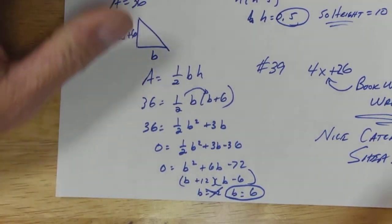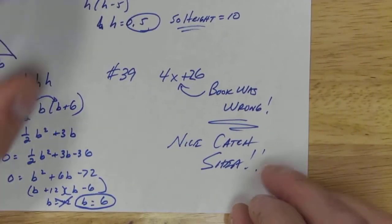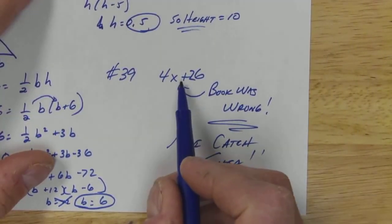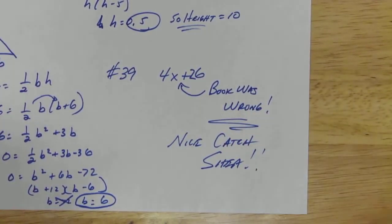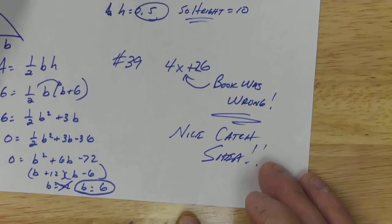39 had a little mistake in the back of the book. Good catch to Shea, nice job. It should be 4x plus 26. So if you got plus 26, you did it right, the book was wrong. In my book they had the right answer in the teacher's manual in the front, but in the back they had the minus 26. So they were just wrong in the back. I can't imagine how hard it would be to write a textbook and get everything right.